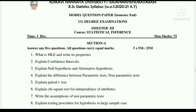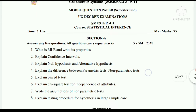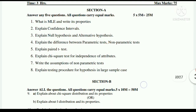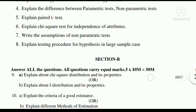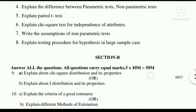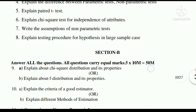Here are the maximum likelihood and parametric test questions — there are 4 questions. Choose the important ones related to non-parametric topics and prepare the best answers. Question 9A: Explain about chi-square distribution and its properties. 9B: Explain about F distribution and its properties. 10A: What are the criteria of a good estimator? Explain different methods of estimation.